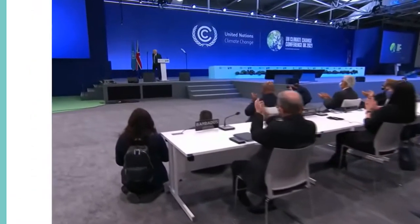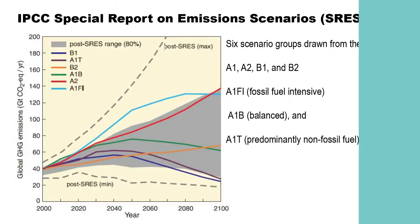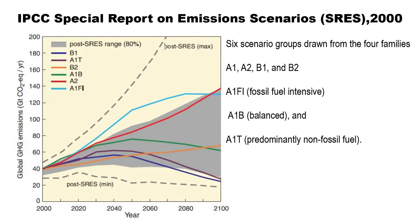They then approved the scenarios developed for use in modeling studies and used their results in reports. The first climate change scenario, called IS92, was released in 1992, consisting of six global and regional greenhouse gas emission scenarios projected from 1990 through 2100. In the year 2000, the IPCC released a second generation of projections, collectively referred to as the Special Report on Emission Scenarios, or SRES.